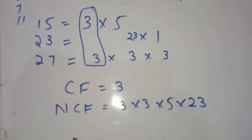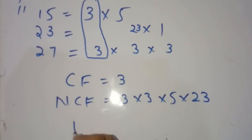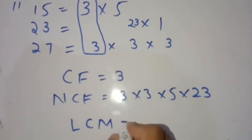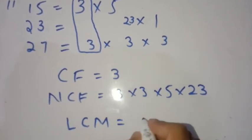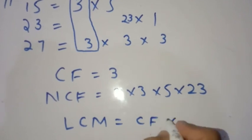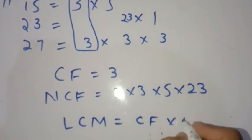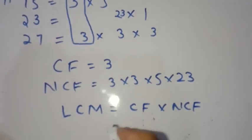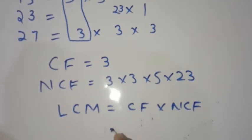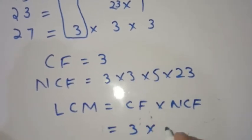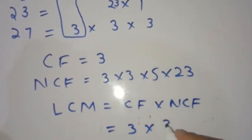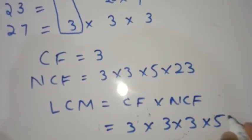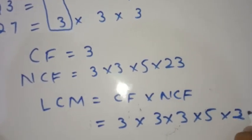The formula is: LCM = common factor × non-common factors. Here the common factor is 3, and the non-common factors are 3 × 3 × 5 × 23.